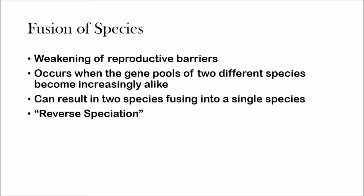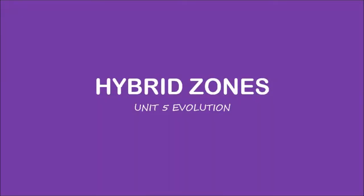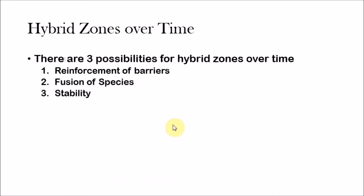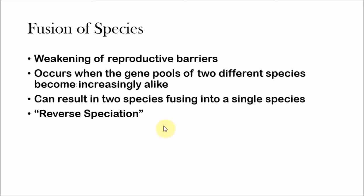The second thing that can happen to hybrid zones is fusion of species. This happens when you see a weakening of reproductive barriers and occurs when the gene pools of two different species become increasingly alike. The two species will start to fuse together to create one species, and the hybrid will become the only species that exists. You can think of it as reverse speciation — you're starting to combine species together. This typically happens when the hybrid species is better suited for the environment than the parent species, so natural selection selects for the hybrid species and they start to reproduce and outcompete the parent species.